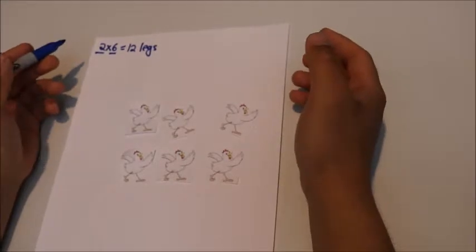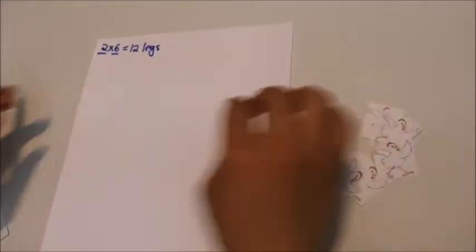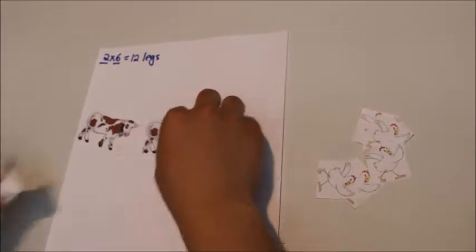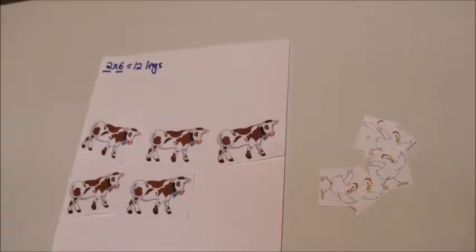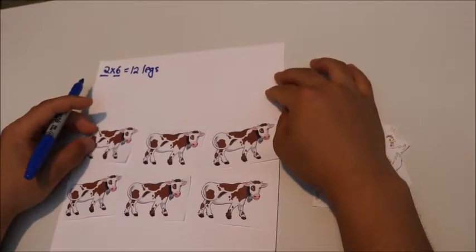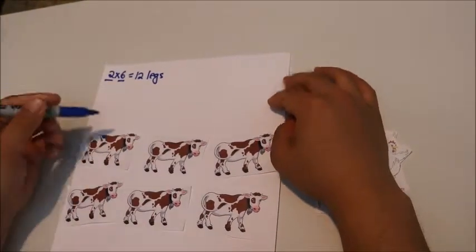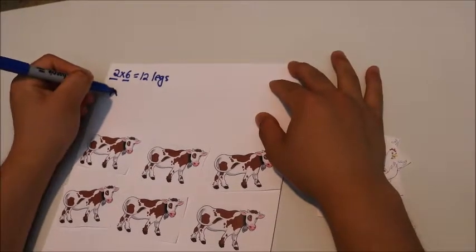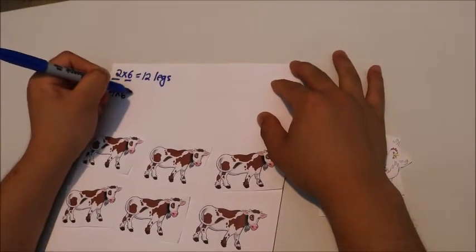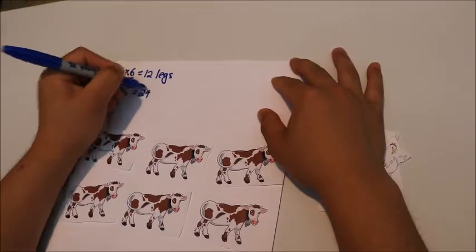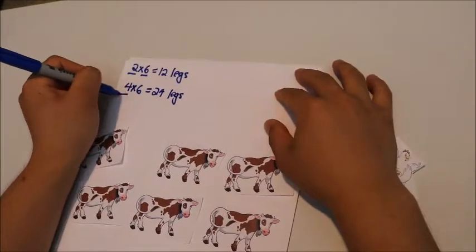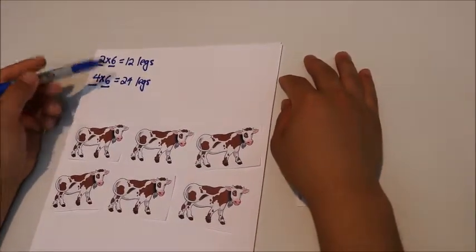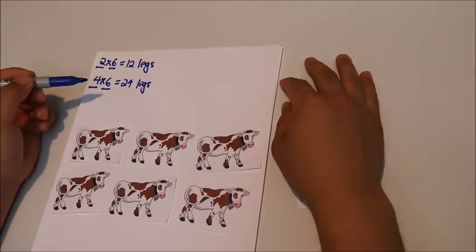So now let's consider if Old MacDonald had only cows. If Old MacDonald had only cows, there would be 6 heads and 4 times 6 or 24 legs, because we know that each cow has 4 legs and there are 6 of them. But 24 is not equal to 18, which is the number of legs we must have.